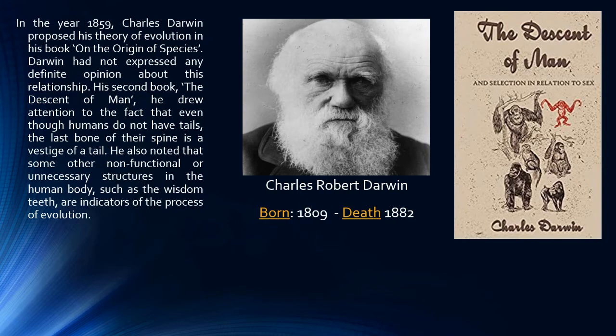His second book, The Descent of Man, he drew attention to the fact that even though humans do not have tails, the last bone of their spine is a vestige of a tail. He also noted that some other non-functional or unnecessary structures in the human body such as the wisdom teeth are indicators of the process of evolution.